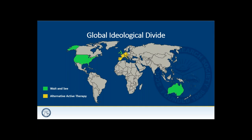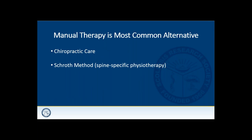We start seeing a global ideological divide in treatment for scoliosis. North America, Australia, and the UK are really part of the 'wait and see' group — a child comes with a small curve, you wait and observe, and if it gets bigger you brace, and if it gets bigger still, you perform surgery. Our friends in Europe have a slightly different approach — they use alternative therapies as essentially a substitute or adjunct to the typical standard management. The most popular of these alternative therapies are manual therapies, including chiropractic care and the Schroth method and spine-specific physiotherapies.